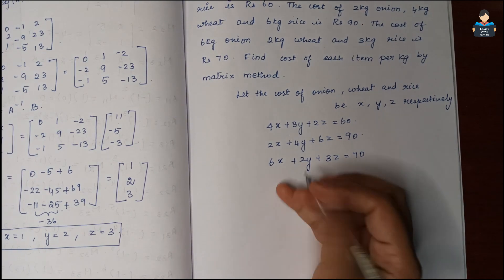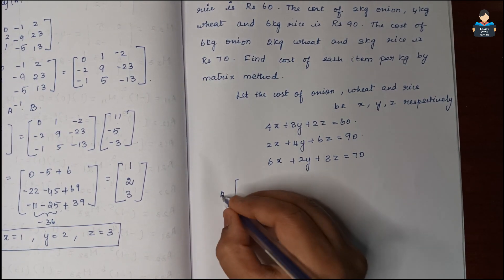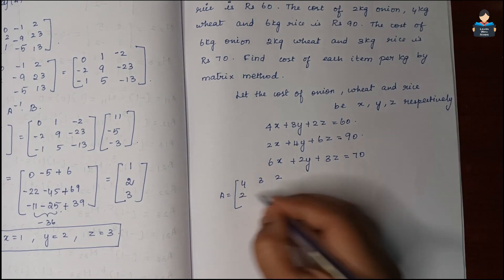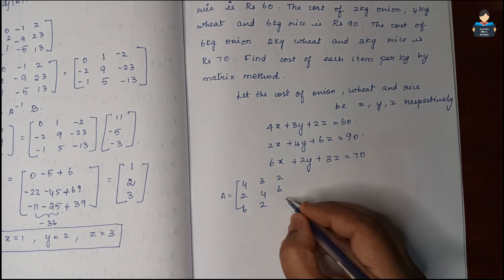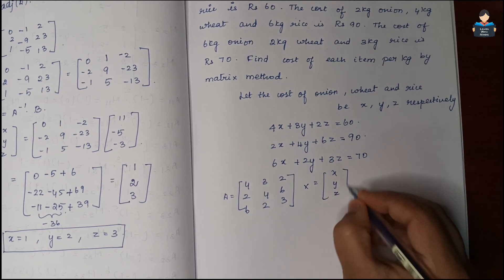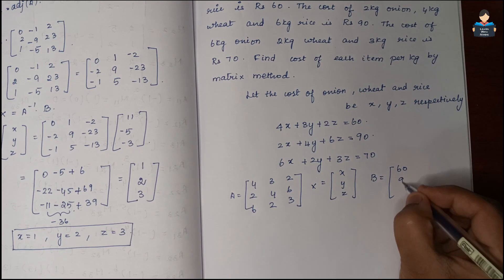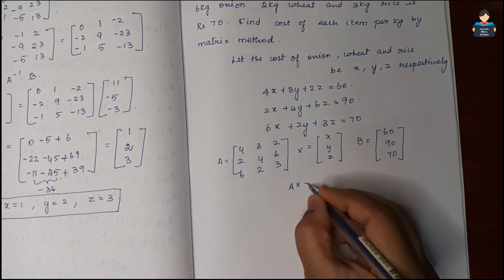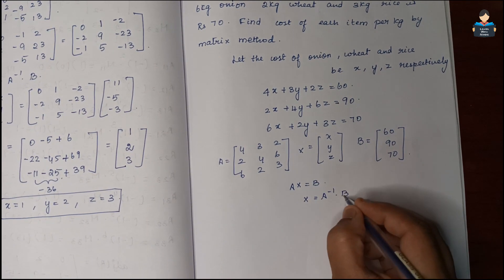Let's make this matrix form. Matrix A is: [4, 3, 2 / 2, 4, 6 / 6, 2, 3], X is [x, y, z], and B is [60, 90, 70]. So AX = B, and therefore X = A⁻¹ · B.